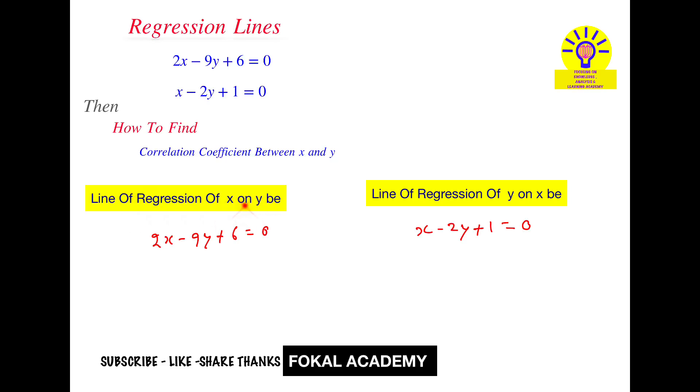What is the meaning of this? Line of regression of x on y means write this equation in terms of x. Bring x on one side, that is 2x equals, bring these two terms on right hand side, it becomes 9y minus 6, and x becomes 9 by 2 times y minus 3. This is x on y.